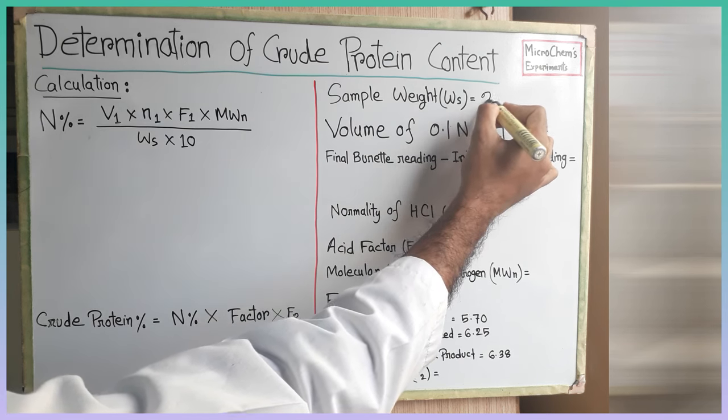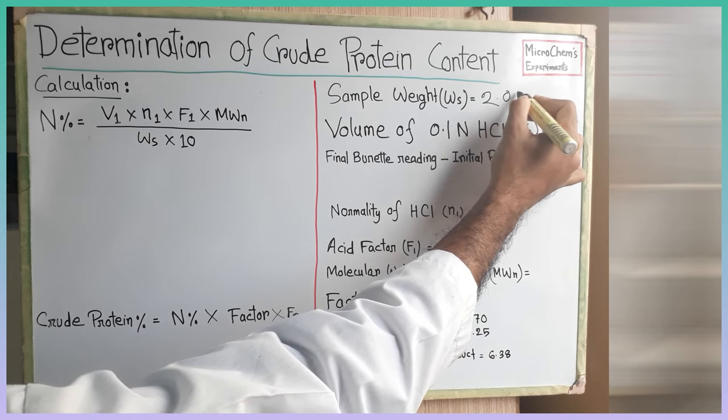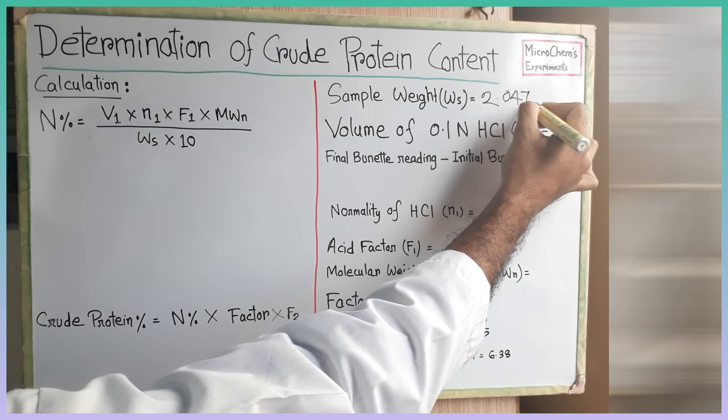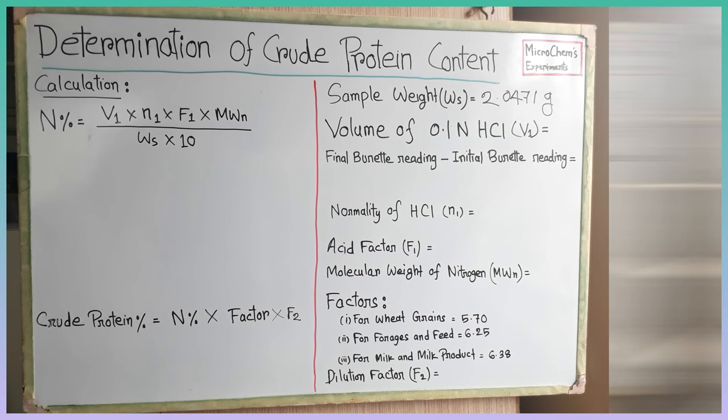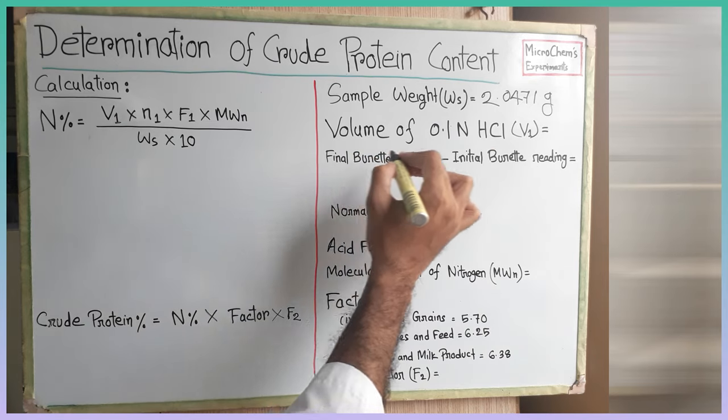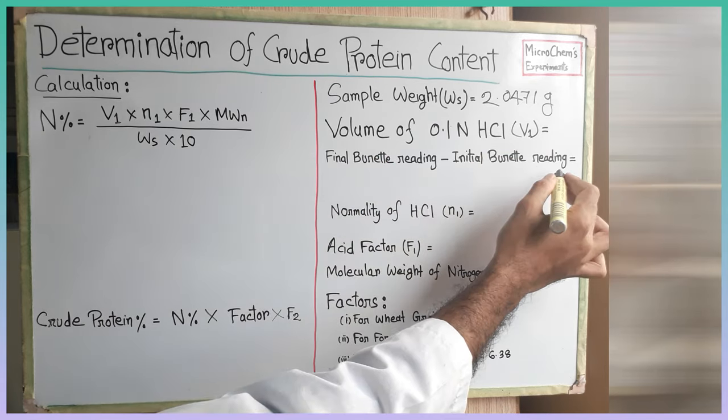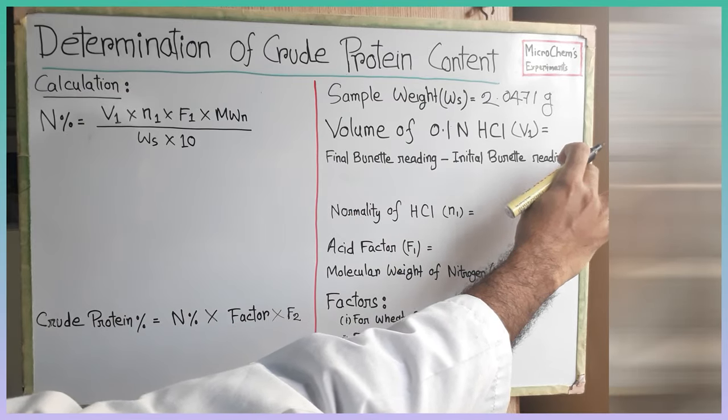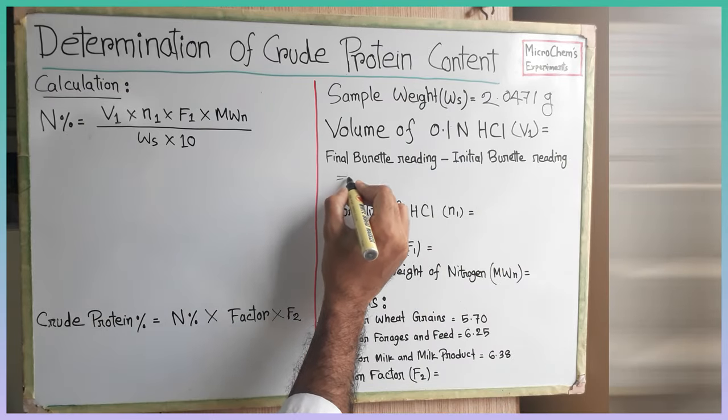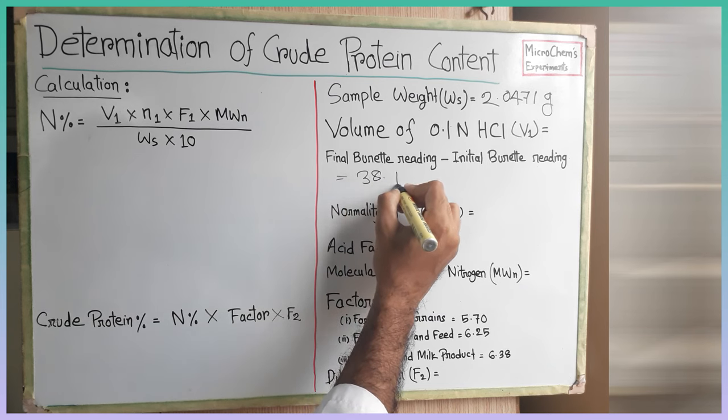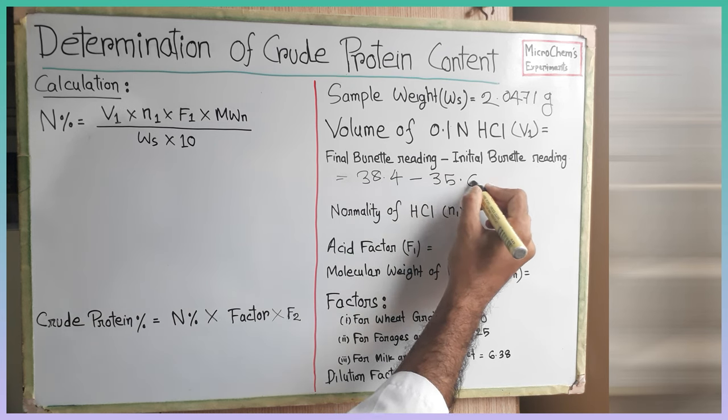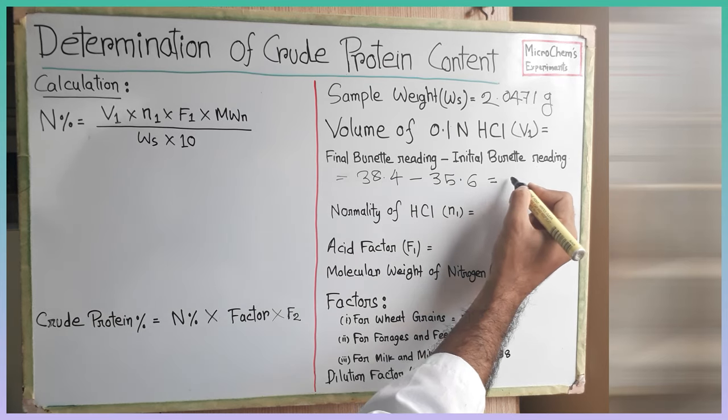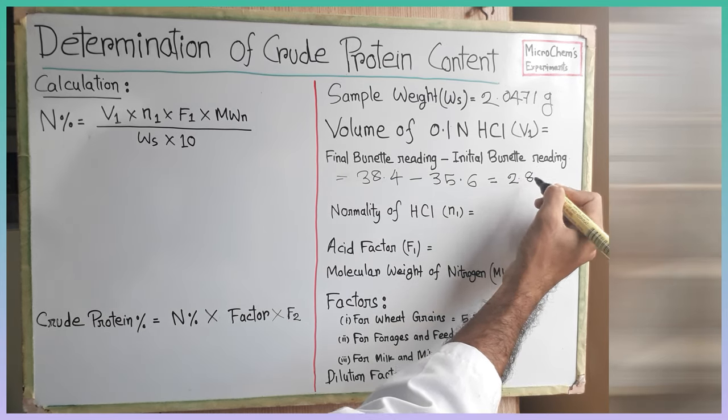We took 2.0471 grams of sample to test. So the sample weight Ws is 2.0471 grams. Now we need the volume of 0.1 normal hydrochloric acid that was used in the titration. We can get this volume by subtracting the final burette reading from the initial reading. So the final burette reading is 38.4 minus the initial burette reading is 35.6. By subtracting these two values we can get V1 is 2.8 milliliters.